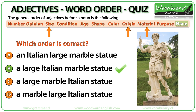A large Italian marble statue. Large refers to the size of the statue, Italian is the origin, and marble refers to the material the statue is made of. The order is: size, then origin, then material.